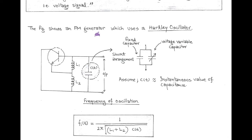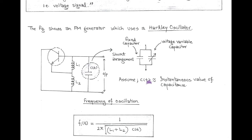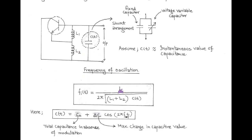The Hartley oscillator is a type of voltage controlled oscillator. It consists of a transistor, inductors L1 and L2, and a shunt capacitor. In this combination, we assume that the capacitor also has a shunt arrangement. Here, a fixed capacitor and a voltage variable capacitor are arranged in parallel, giving the instantaneous value of capacitance, denoted by C(t).